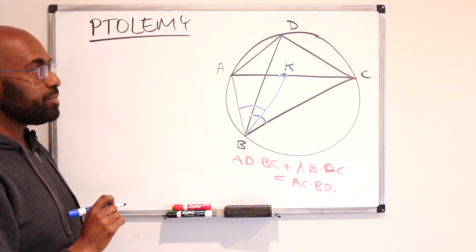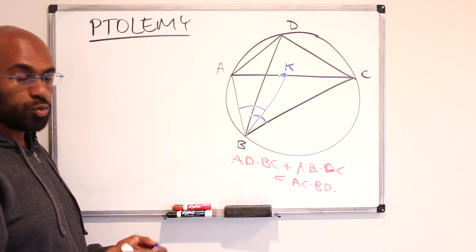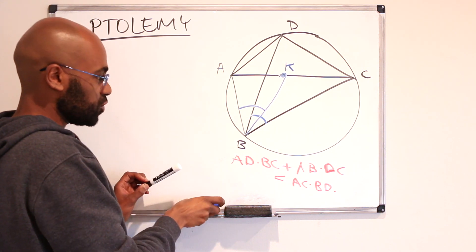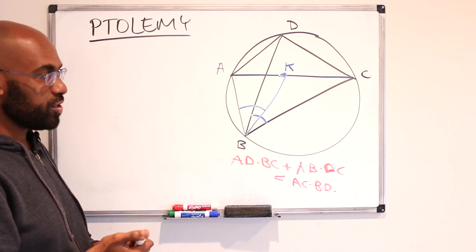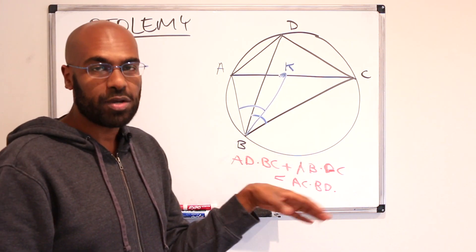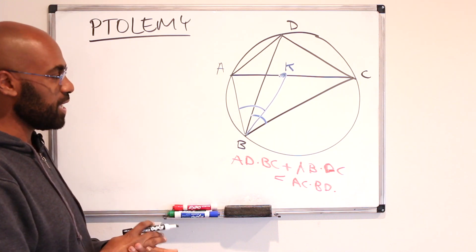And from this we're going to be able to construct two similar triangles that are going to allow us to determine this equality. The similar triangles are going to use quantities in this expression so that we get closer to this expression as we can.